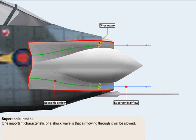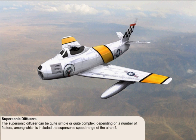One important characteristic of a shock wave is that air flowing through it will be slowed. The task of controlling the shock waves that form on or in the air intake, which is fundamental if we're to efficiently reduce the velocity of the airflow, is undertaken by a supersonic diffuser. The supersonic diffuser can be quite simple or quite complex, depending on a number of factors, among which is included the supersonic speed range of the aircraft.